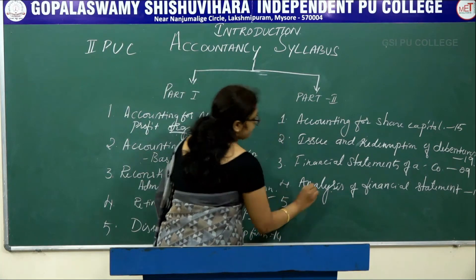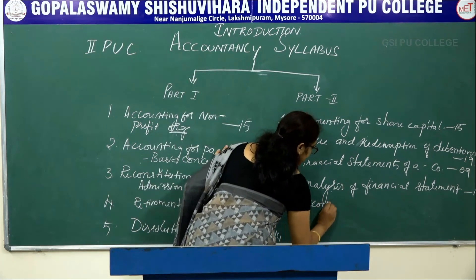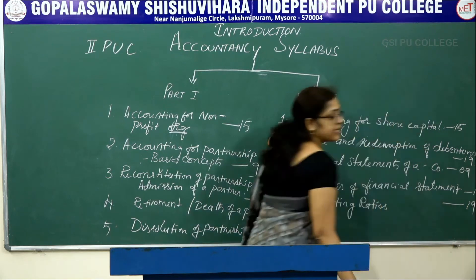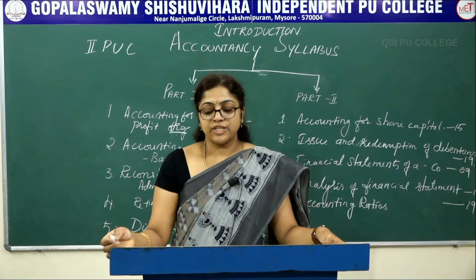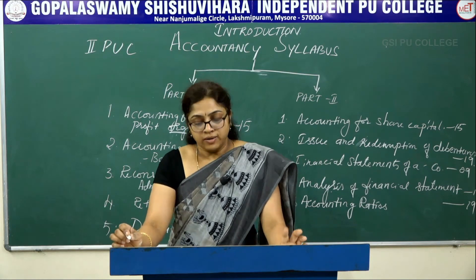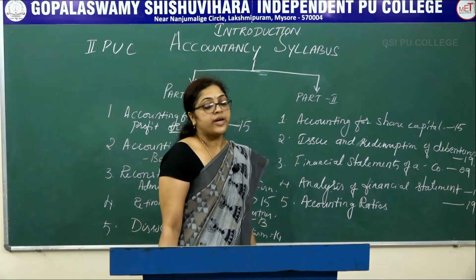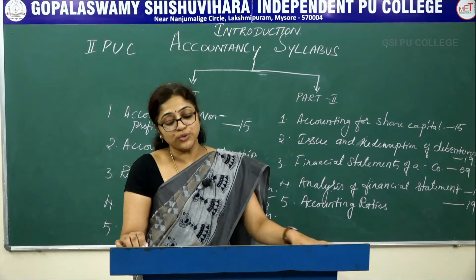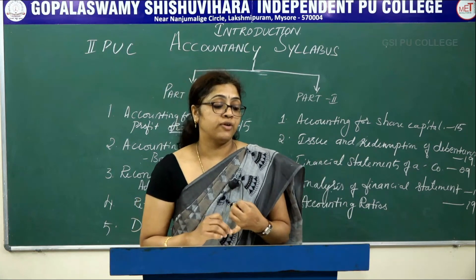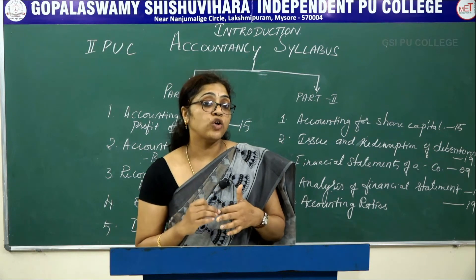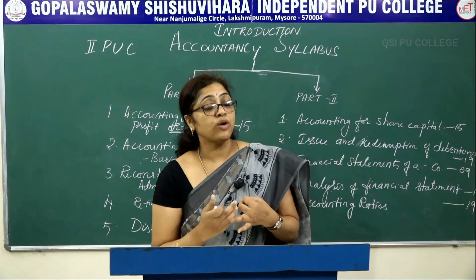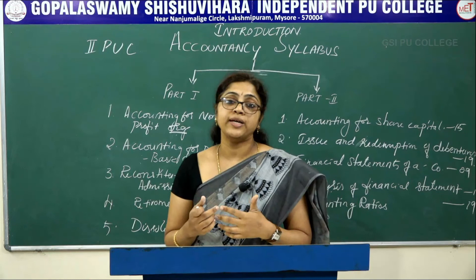The fifth chapter under Part 2 is Accounting Ratios. Total marks allotted to this chapter is 19. A ratio is a relationship between two numbers expressed as a percentage or proportion. Ratio analysis is a mathematical tool used to evaluate the financial position of a company. In this chapter you learn about the meaning, objectives, advantages, and limitations of accounting ratios, and different types — liquidity ratios, solvency ratios, turnover ratios, and profitability ratios.